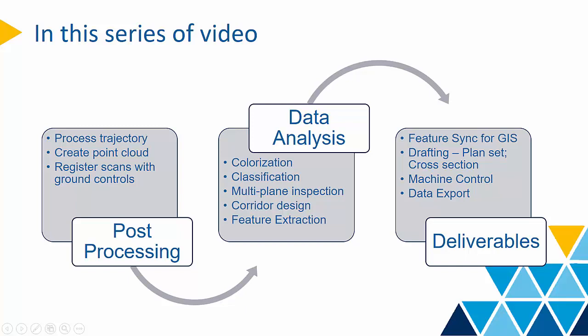We can also do corridor design using the existing point cloud and extract point features such as trees, poles, and signs semi-automatically. At the end of the workflow, we will synchronize the features into a GIS data system, do some drafting for plan view and cross-section view. The corridor design can also be sent to machine control people so field crew can start stakeout immediately. We will also show you how to export data into third parties.